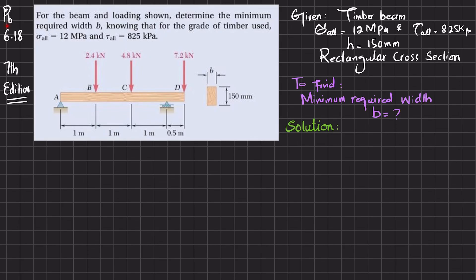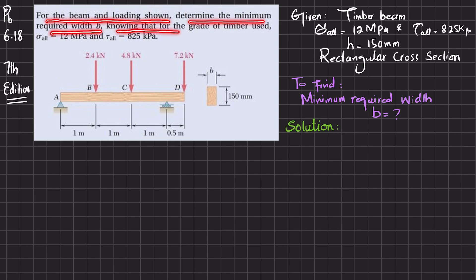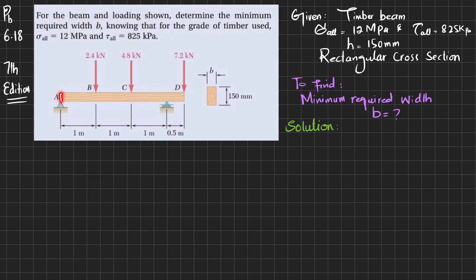Hello, welcome back. Problem 6.18 is taken from Mechanics of Materials by Beer & Johnston, 7th edition. The statement is: for the beam and loading shown, determine the minimum required width b, knowing that for the grade of timber used, the allowable bending stress is 12 MPa and the allowable shearing stress is 825 kPa.